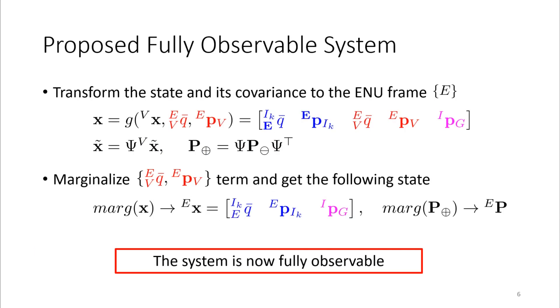To solve this unobservability issue, we propose to transform the state and its covariance to the ENU frame and marginalize the transform parameters from the state because they are no longer needed. In this way, the transformed state is now fully observable. We apply this transformation technique in the GPS-VIO initialization step so that our system is fully observable.